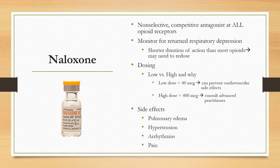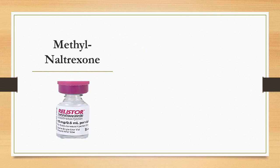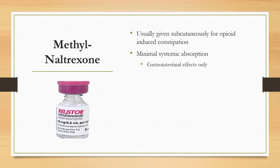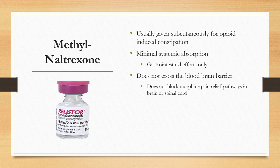Methylnaltrexone is not given in the OR or PACU, but is important to mention as its popularity has increased for patients on chronic opioid medications. It is used to treat chronic constipation caused by chronic opioid use. Its minimal systemic absorption means effects are only produced at its site of action in the GI tract; it does not cross the blood-brain barrier, so it cannot block pain relief pathways in the brain or spinal cord. Side effects include abdominal pain, flatulence, and diarrhea.